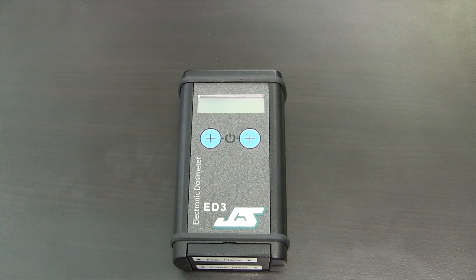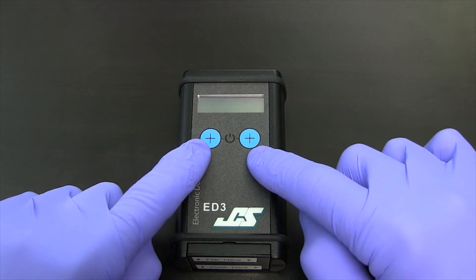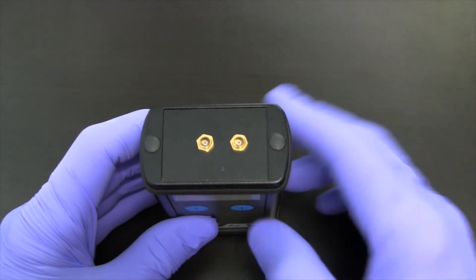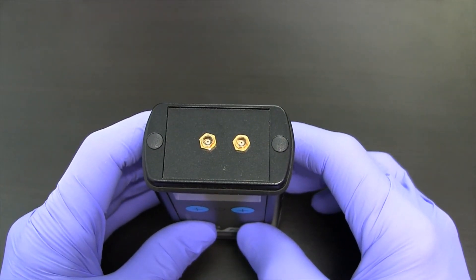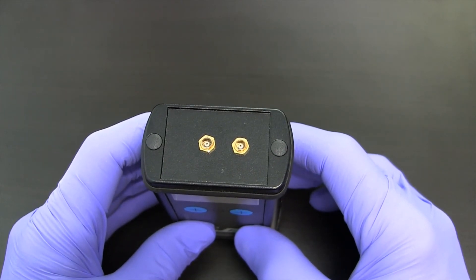This is the ED3 electronics unit. It has a display, two buttons that we'll discuss later, as well as two connectors for the two detectors, potentially one for each hand or for different extremity locations, although now optionally also for eye dosimetry.